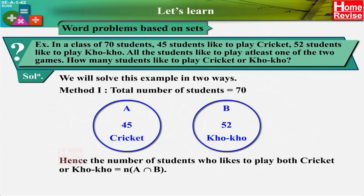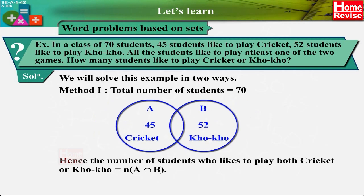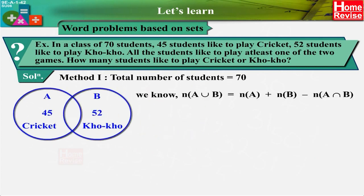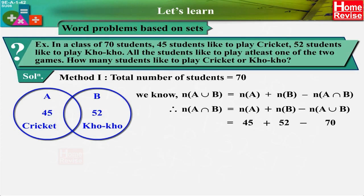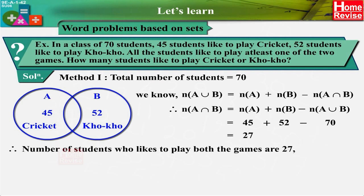The number of students who like to play both cricket and Kho-kho is equal to n(A ∩ B). n(A) = 45, n(B) = 52. We know n(A ∪ B) = n(A) + n(B) − n(A ∩ B). Therefore n(A ∩ B) = n(A) + n(B) − n(A ∪ B) = 45 + 52 − 70 = 27.